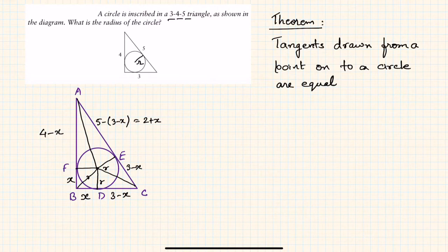Now clearly, if the sides are 3, 4, and 5, then by the converse of the Pythagorean theorem, this triangle happens to be a right-angle triangle, and here is the 90-degree angle.